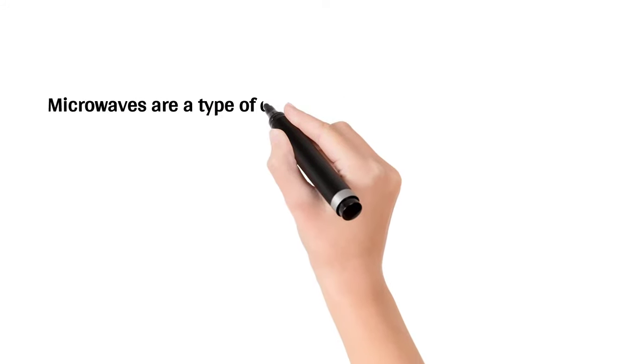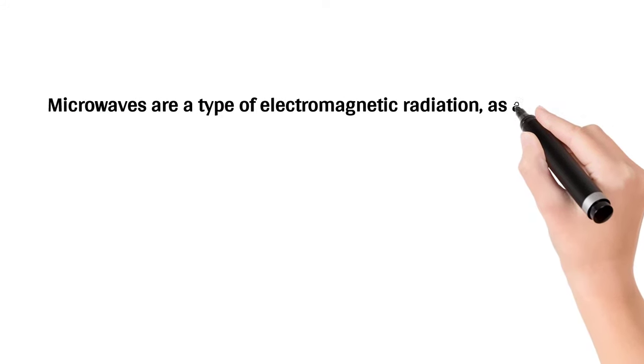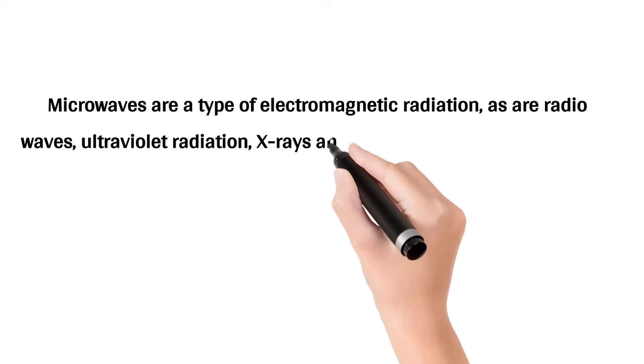Microwaves are a type of electromagnetic radiation, as are radio waves, ultraviolet radiation, X-rays and gamma rays.